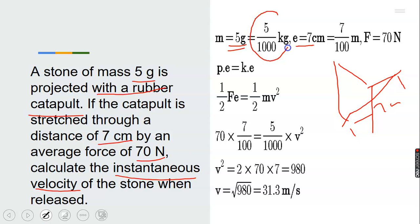You are supposed to convert grams to kilograms by dividing 5 by 1000. Also, when dealing with elasticity, you always work in meters. So you divide 7 cm by 100 to give your answer in meters, and the force with which the rubber was stretched is 17 N.